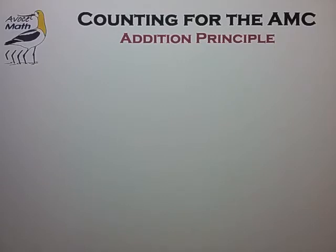In the AMC we often find that the set we're trying to count is just too complicated to count in a single pass. So sometimes we have to look for opportunities to divide or partition a set into smaller, more manageable groups or subsets that are easier to count.